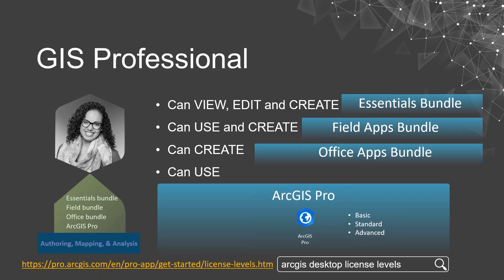Our final standard user type is the GIS professional. The GIS professional has all the same privileges as the creator except it now comes bundled with an ArcGIS Pro license. ArcGIS Pro licensing is available in three levels — Basic, Standard, and Advanced — so the GIS professional user type also comes in those three flavors. For more information on what each licensing level contains, search for the phrase 'ArcGIS Desktop Levels' and click on the top result.